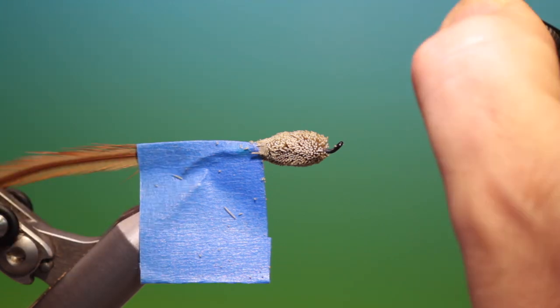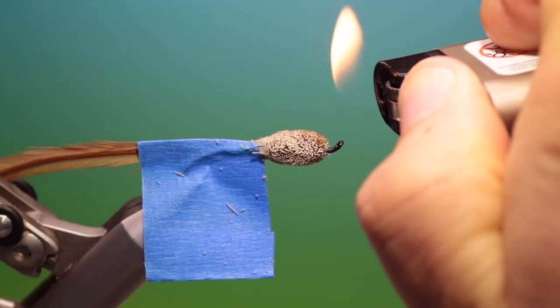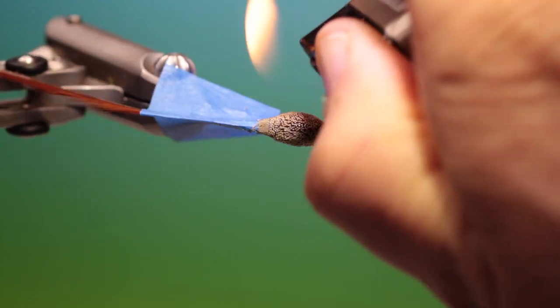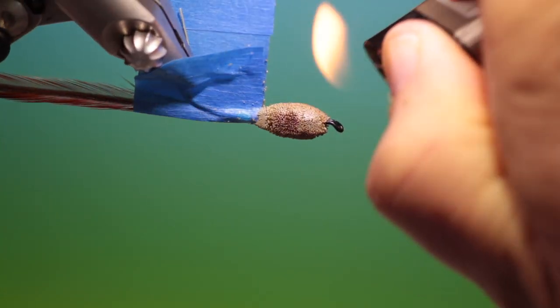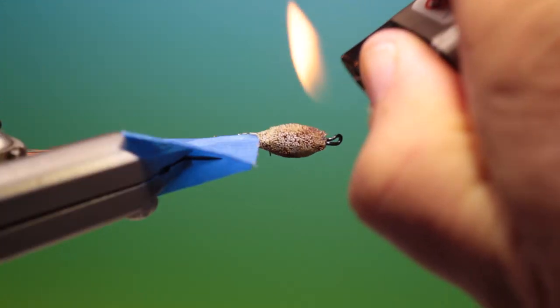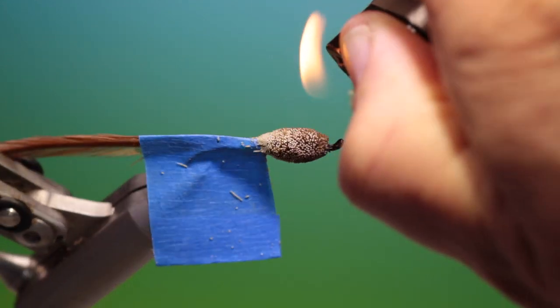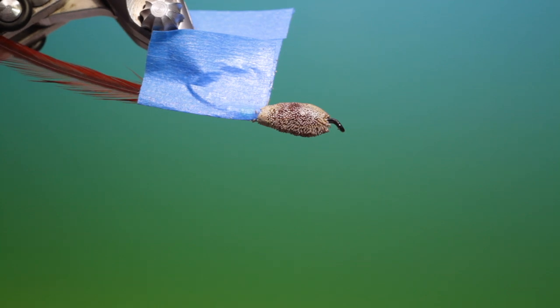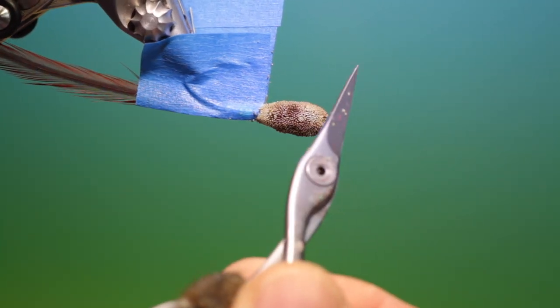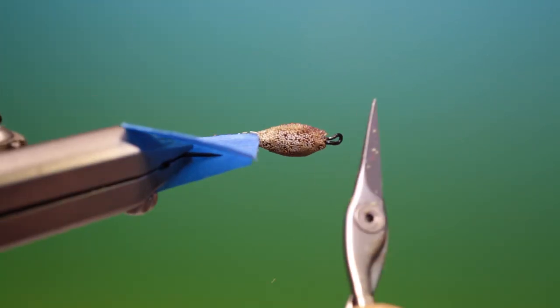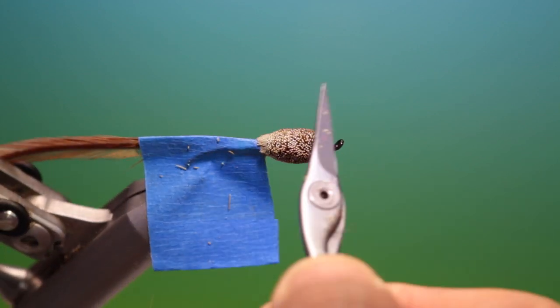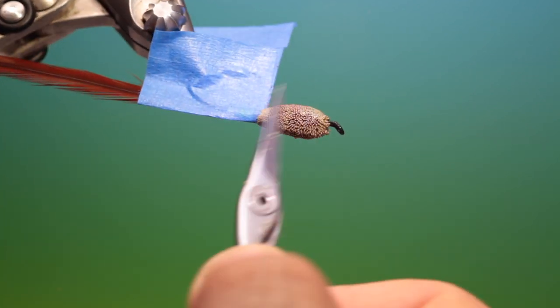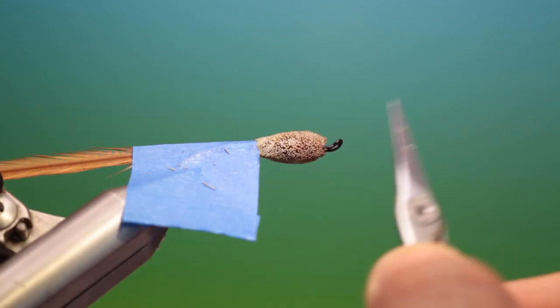But then before I remove the tape I take my lighter, take my scissors edge, just remove the soot and we can remove the tape.